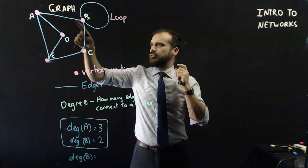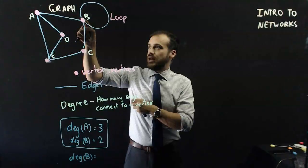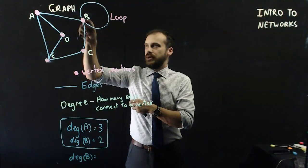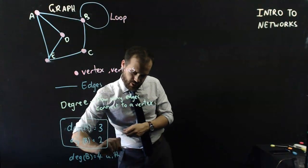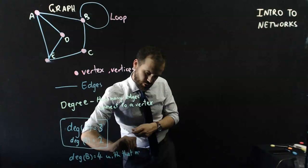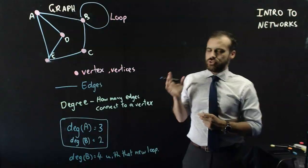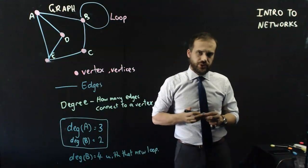Even though there are only 3 edges connected to B, it's the actual beginning and end of the edge that we count. So we actually have degree 4 now, with that new loop. So loops add degree 2 to any vertex that you add them to.